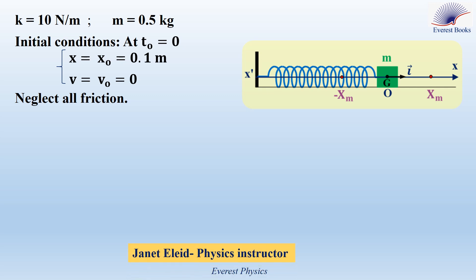Consider this horizontal elastic pendulum. The force constant of the spring is 10 newtons per meter, and the mass of the block is 0.5 kilograms. The block's center of mass G is displaced horizontally to the right by a distance of 10 centimeters, and then it is released from rest at t₀ equals 0. So the initial condition is: x₀ is positive, equal to 0.1 meters. The initial speed v₀ is 0. We neglect all friction.